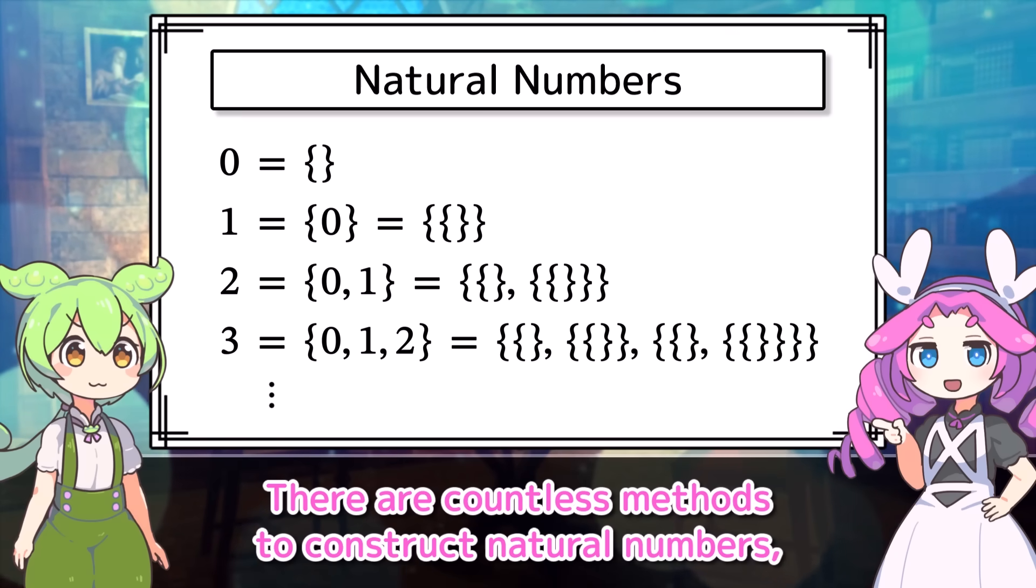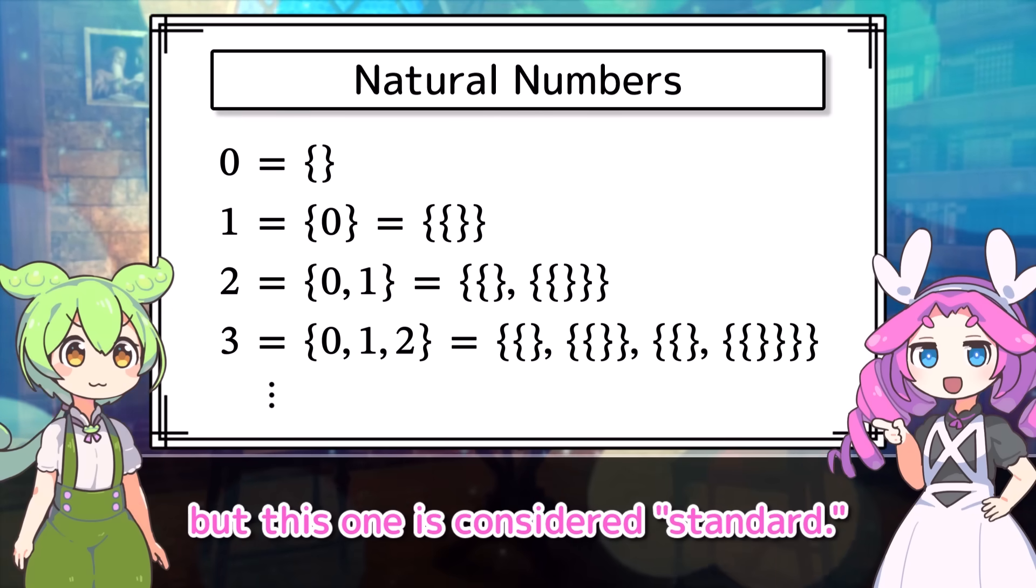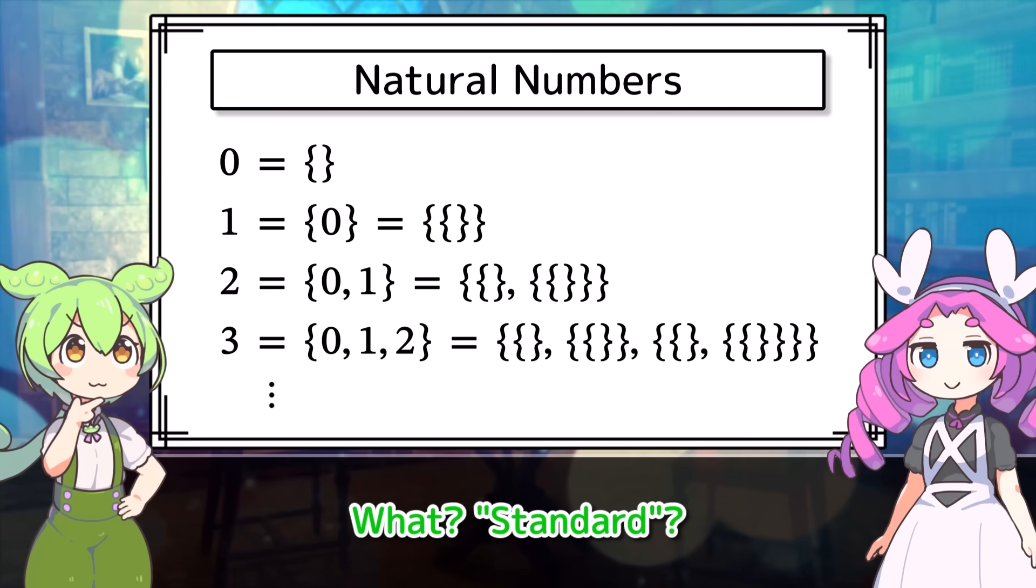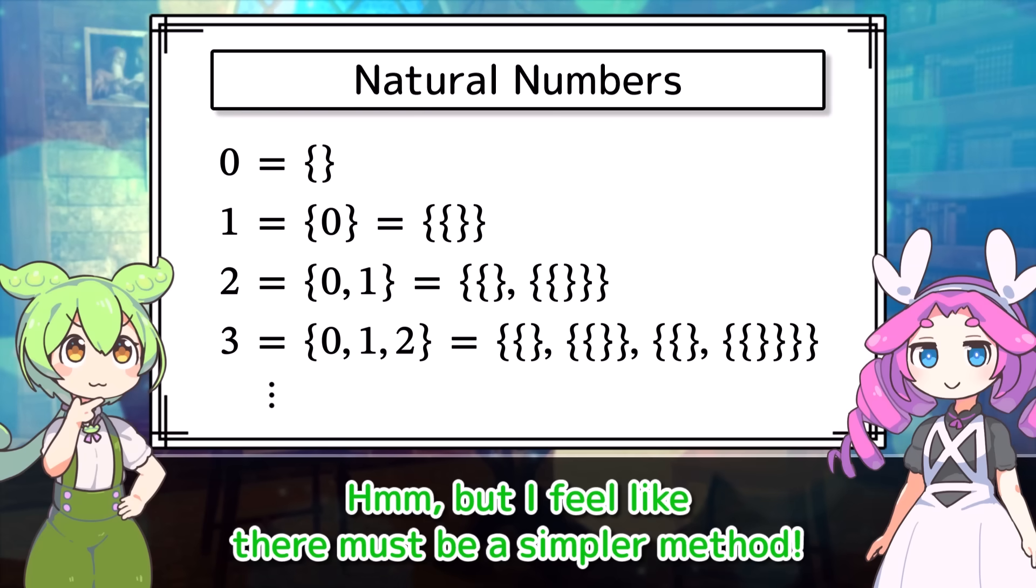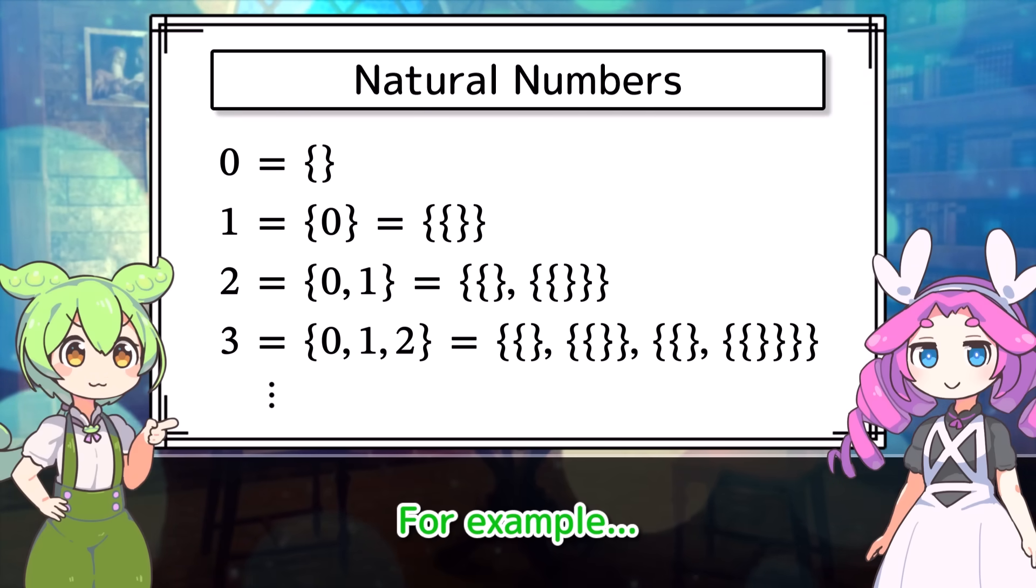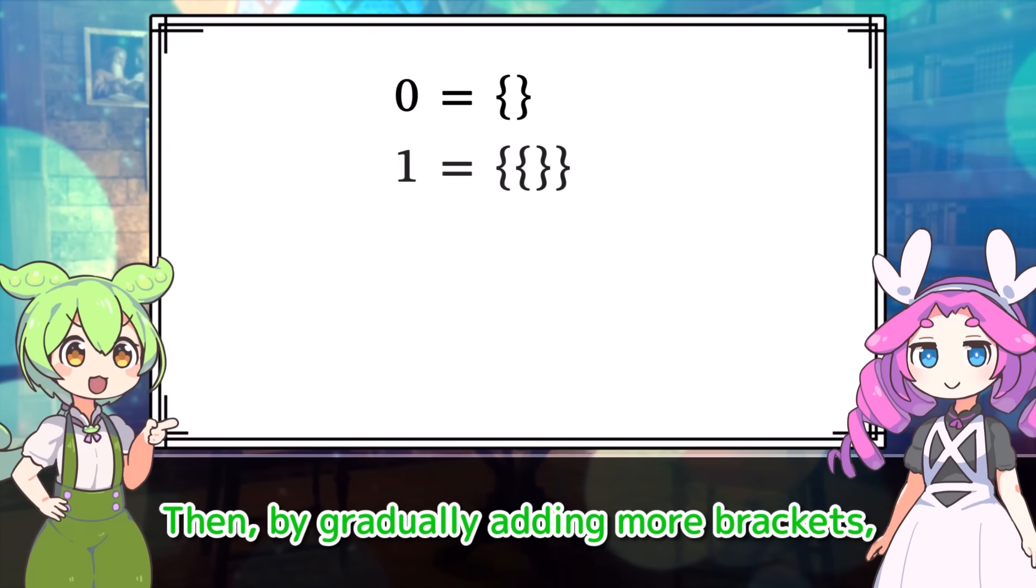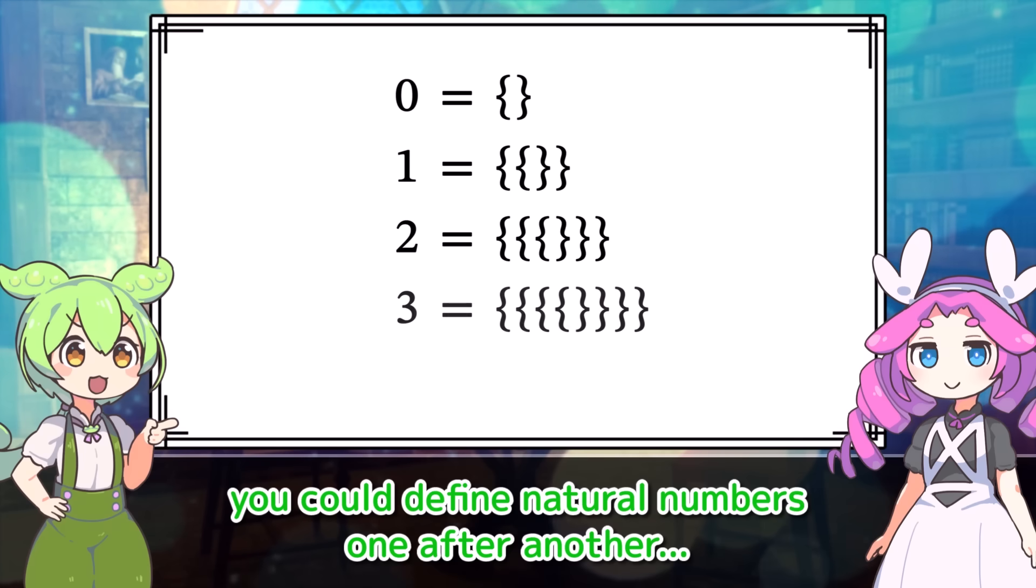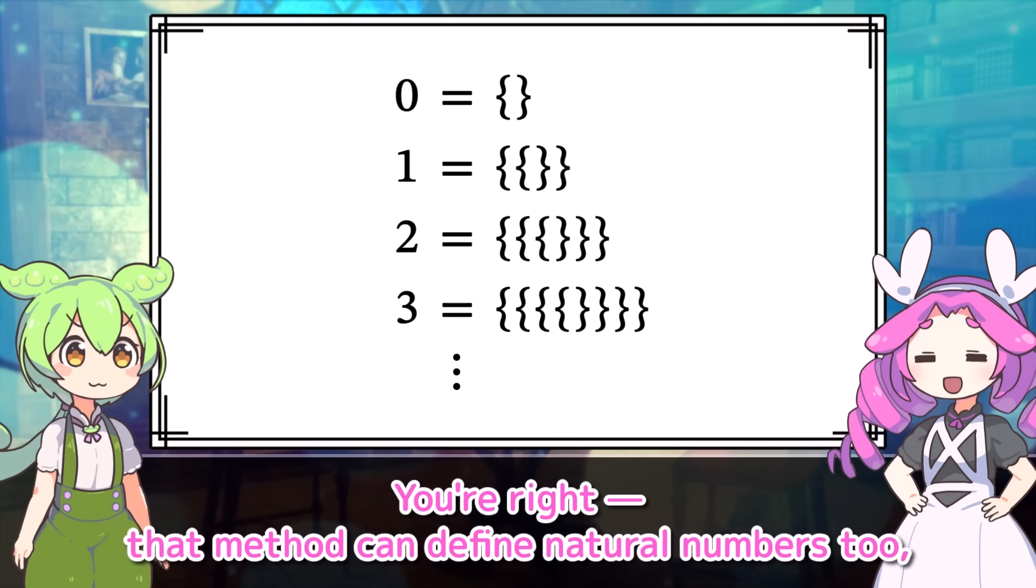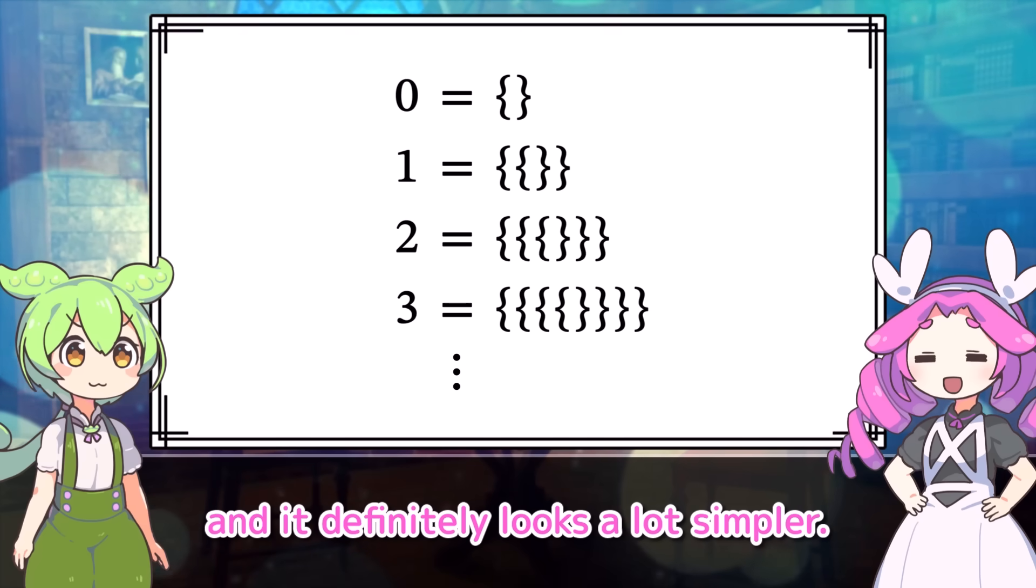There are countless methods to construct natural numbers, but this one is considered standard. What? Standard? Hmm, but I feel like there must be a simpler method. For example, define zero as the empty set. Then by gradually adding more brackets, you could define natural numbers one after another. You're right. That method can define natural numbers too. And it definitely looks a lot simpler.